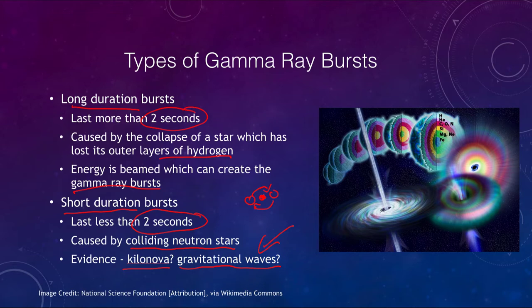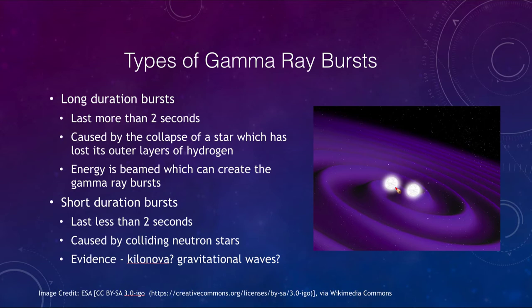For short duration bursts, we are looking at two neutron stars actually colliding together. Evidence for this includes kilonovae and gravitational waves. Gravitational waves have now been detected from black holes and are predicted for any massive moving objects. Two neutron stars spiraling together and moving very fast would give off gravitational waves; the closer they get, the more rapidly they move, producing stronger and more easily detectable gravitational waves. Any object with mass gives off gravitational waves, but they are so weak that detection requires high-mass objects like neutron stars or black holes moving very quickly.